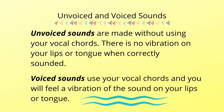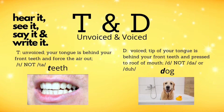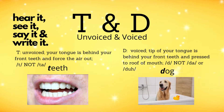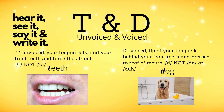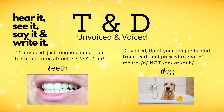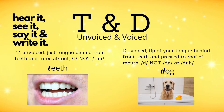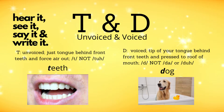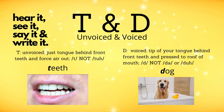Now let's look at unvoiced and voiced sounds. Unvoiced sounds are made without using your vocal cords — there is no vibration on your lips or tongue. Voiced sounds use your vocal cords and you will feel a vibration on your lips or tongue. The letter T is unvoiced: your tongue is behind your front teeth and you force the air out — T, as in the word teeth. D is voiced: the tip of your tongue is behind your front teeth and pressed to the roof of your mouth — D, as in the word dog.